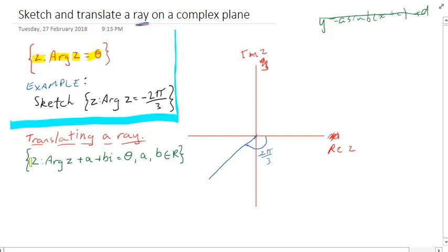shift it up and down, shift it left and right. In the same way, we can translate this ray by rewriting it as z arg(z + a + bi) equals theta, as long as a and b are real numbers.